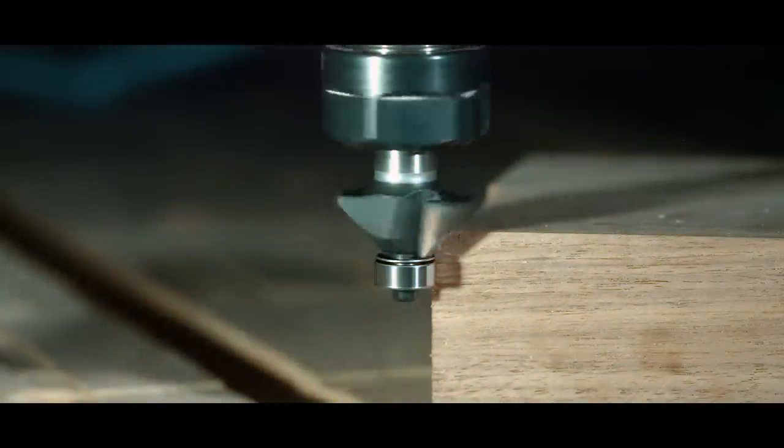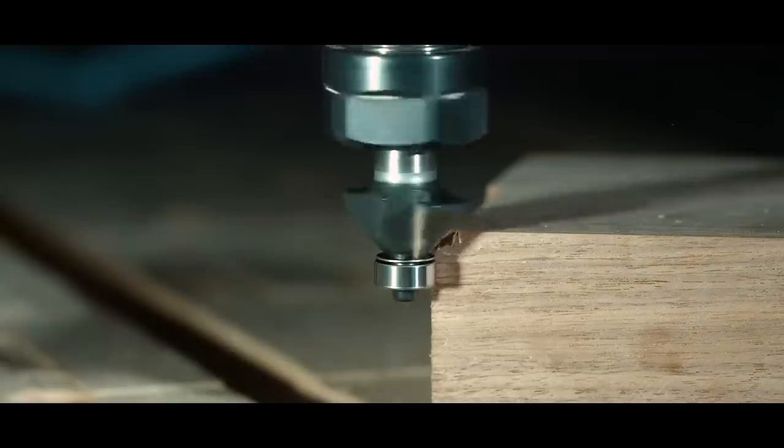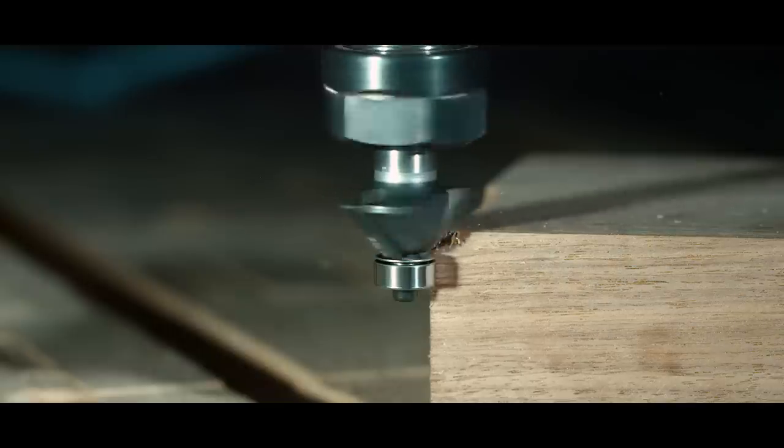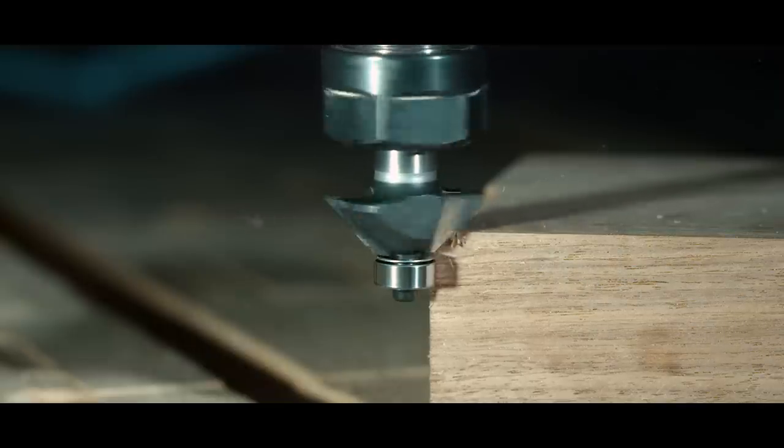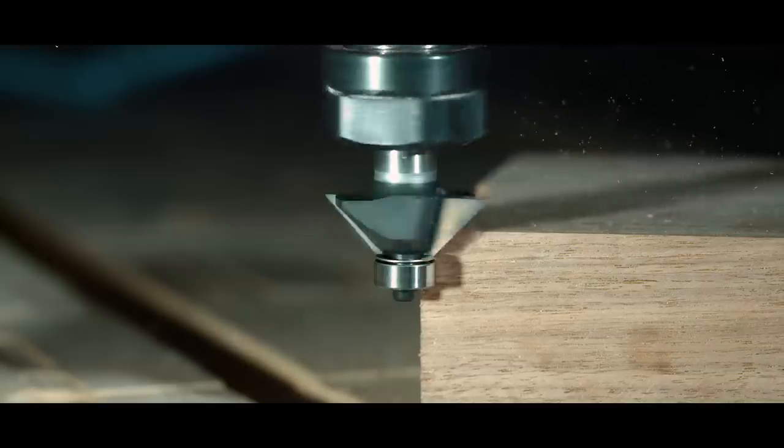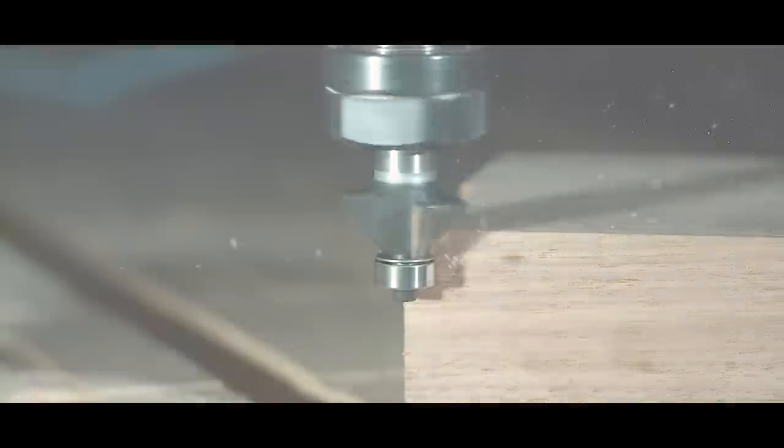You start on the edge and you can actually see right when it starts you even get a little bit more tear out before the bearing completely touches the board. You can see some tear out right here at the top of the piece. But very simply because it is the same height that you cut on the end grain, you just go and it completely cleans it up.